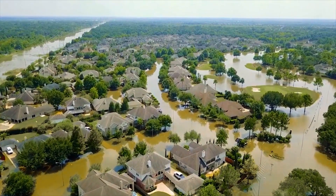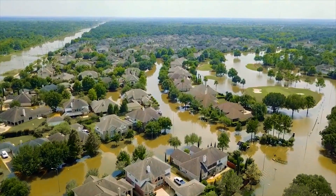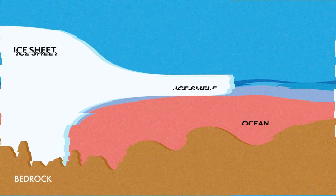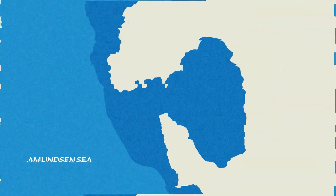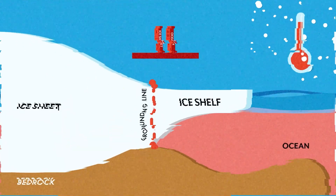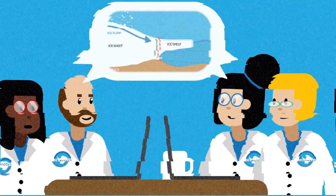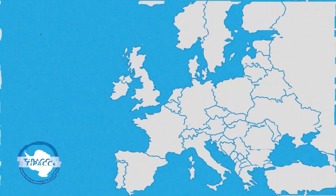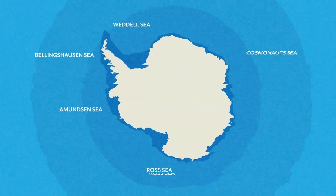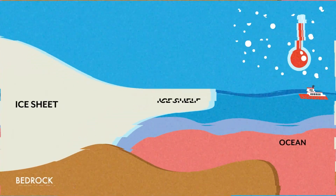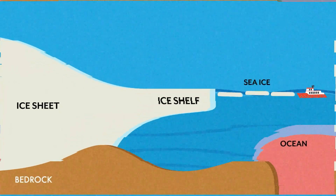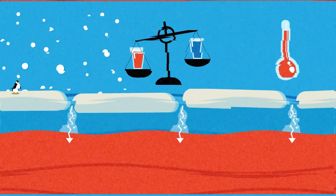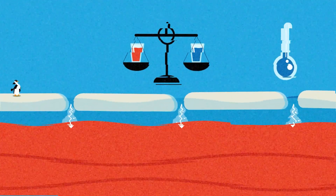But not all is yet lost. The breaking of the cold water protective shield, subsequent ice loss and sea level rise, can be delayed or even avoided altogether in some regions if future global warming remains limited.